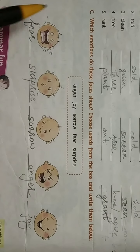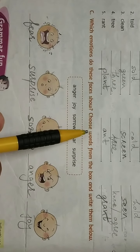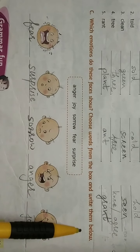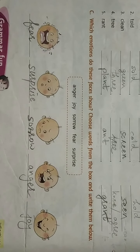Your C question is which emotions do these faces show? Choose words from the box and write them below. What is this first face showing? Fear, surprise, sorrow, anger, joy.